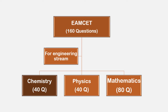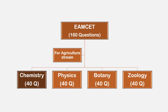Next, for BPC students in the Agriculture Stream, there are also 160 questions total: Chemistry is 40 questions, Physics is 40 questions, and Botany/Biology is 40 questions. The total is 160 marks for both MPC and BPC streams.